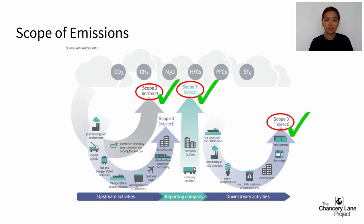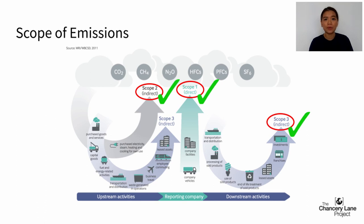Scope three are indirect emissions from the company's entire value chain, even though those sources may not be owned or controlled by the company. These include all the emissions of your suppliers upstream, as well as your downstream transportation, distribution and use of products. It's important to note that the vast majority of most companies' emissions will occur at the scope three level — for the oil and gas sector, easily 90% or more of emissions will be in scope three. The international consensus is that any credible net zero target must include all three scopes, because logically, how do we ensure a whole-of-economy transition to net zero if we miss out any one scope?